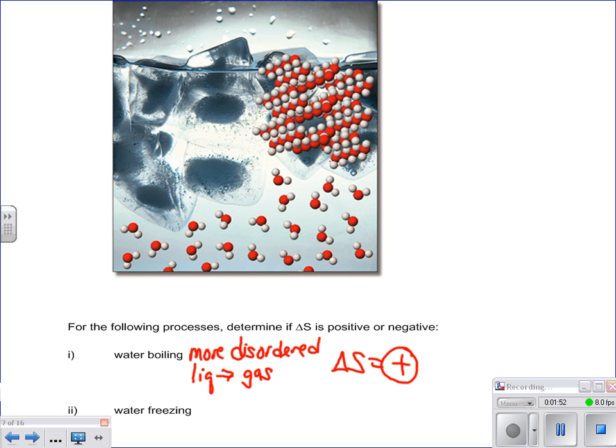And if you have water freezing, it's going to be less disordered. And that's a situation where you have a liquid going to a solid. So therefore, your delta S is going to be a negative value.